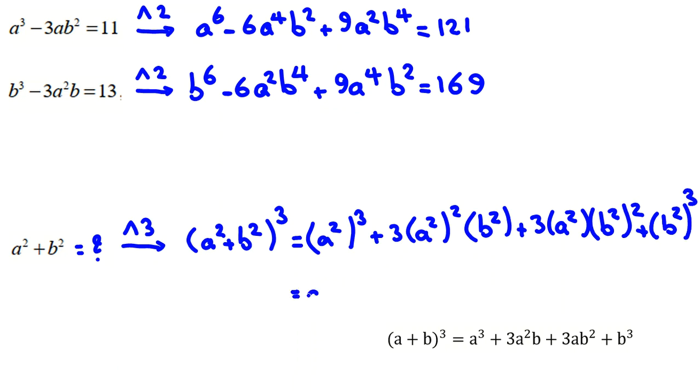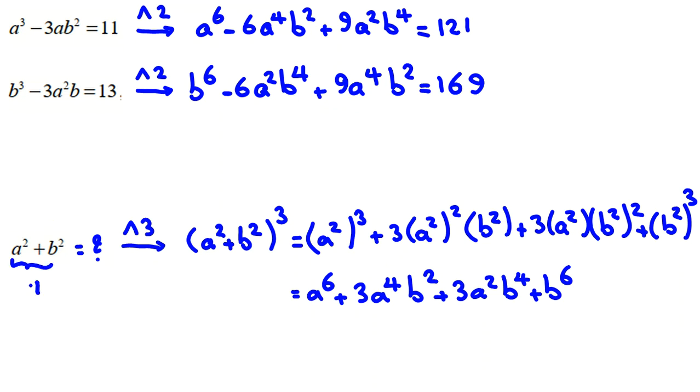If we simplify, it will be a⁶ + 3a⁴b² + 3a²b⁴ + b⁶. So if the answer here, I call this t. So this is t³.